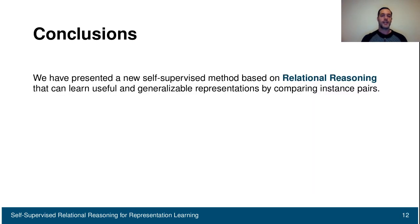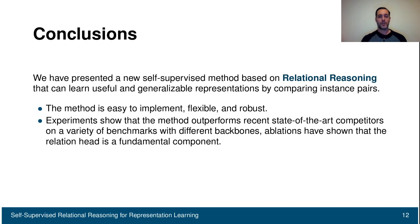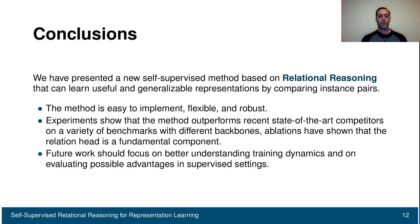In conclusion, relational reasoning is an effective method for self-supervised learning that is easy to implement, flexible, and robust. Experiments show it outperforms recent state-of-the-art competitors on different benchmarks and with different backbones. The ablations confirm the relation head is a fundamental component. For future work, we would like to better understand the training dynamics behind relational reasoning and evaluate the method in other settings, such as fully supervised settings.